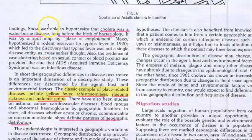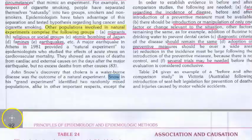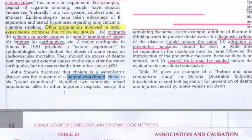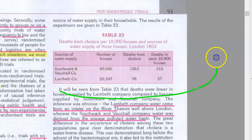This was the Golden Square District of London, 1854. He was able to hypothesize that cholera was a waterborne disease long before the birth of bacteriology, using just a spot map. This is called a natural experiment — he devised a system of methodological observations of natural events or experiments.